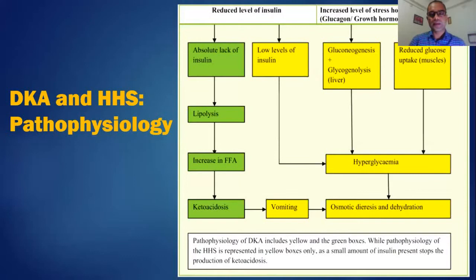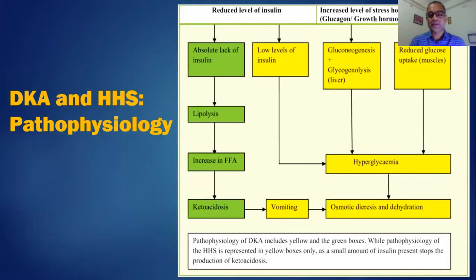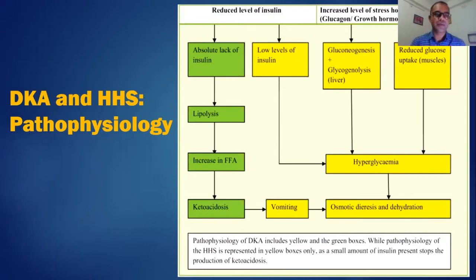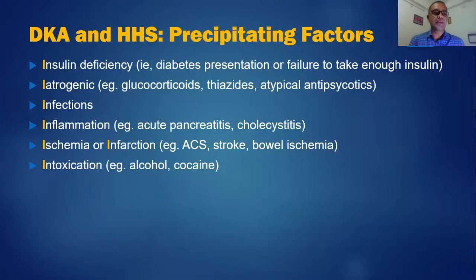Both DKA and HHS are due to reduction of insulin levels, but the key difference is that in DKA there is absolute lack of insulin, while in HHS there is relative deficiency. In DKA, absolute lack of insulin causes lipolysis, leading to increased free fatty acids, ketoacidosis, and acidosis. In HHS, the minimum insulin present is sufficient to prevent lipolysis and DKA development but is not enough to prevent hyperglycemia, osmotic diuresis, and dehydration.